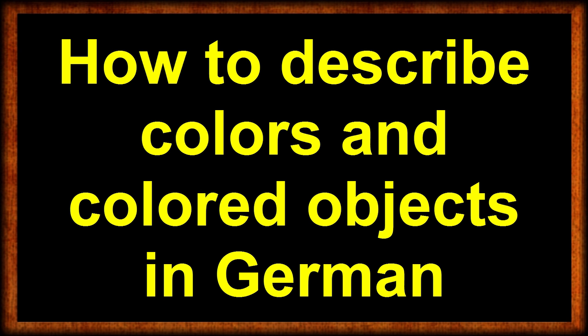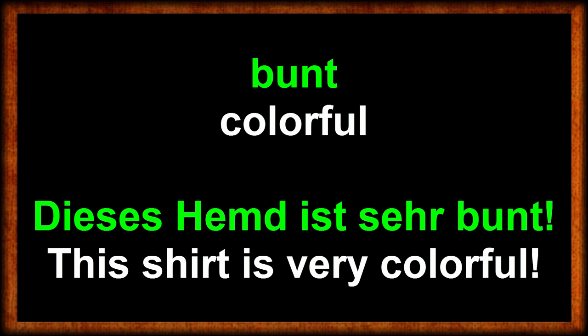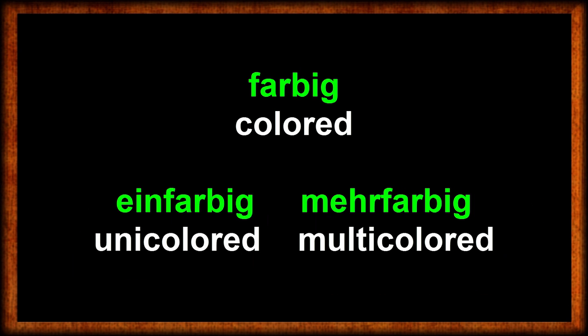Germans often refer to pink as pink, but the actual German equivalent for pink would be rosa. Let's move on to the descriptive side of colors. When you look at something that is very colorful or consists of multiple colors at the same time, you can refer to that as being bunt — colorful. You could also distinguish between something being either einfarbig — unicolored — or mehrfarbig — multicolored.